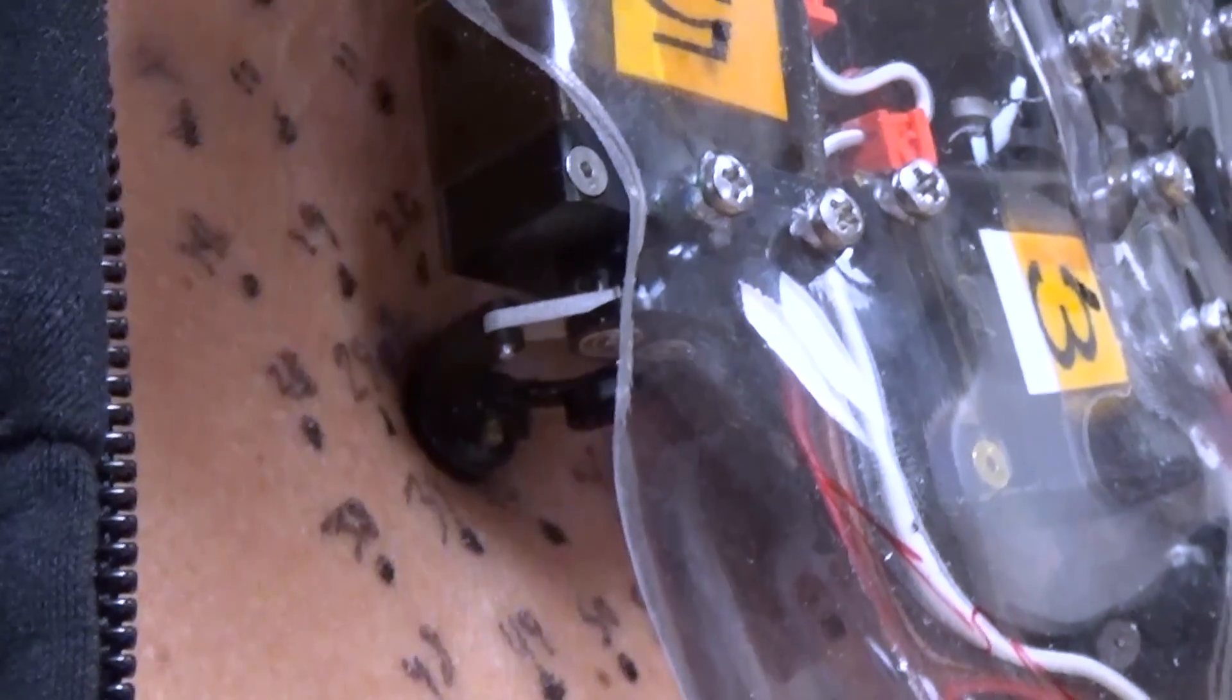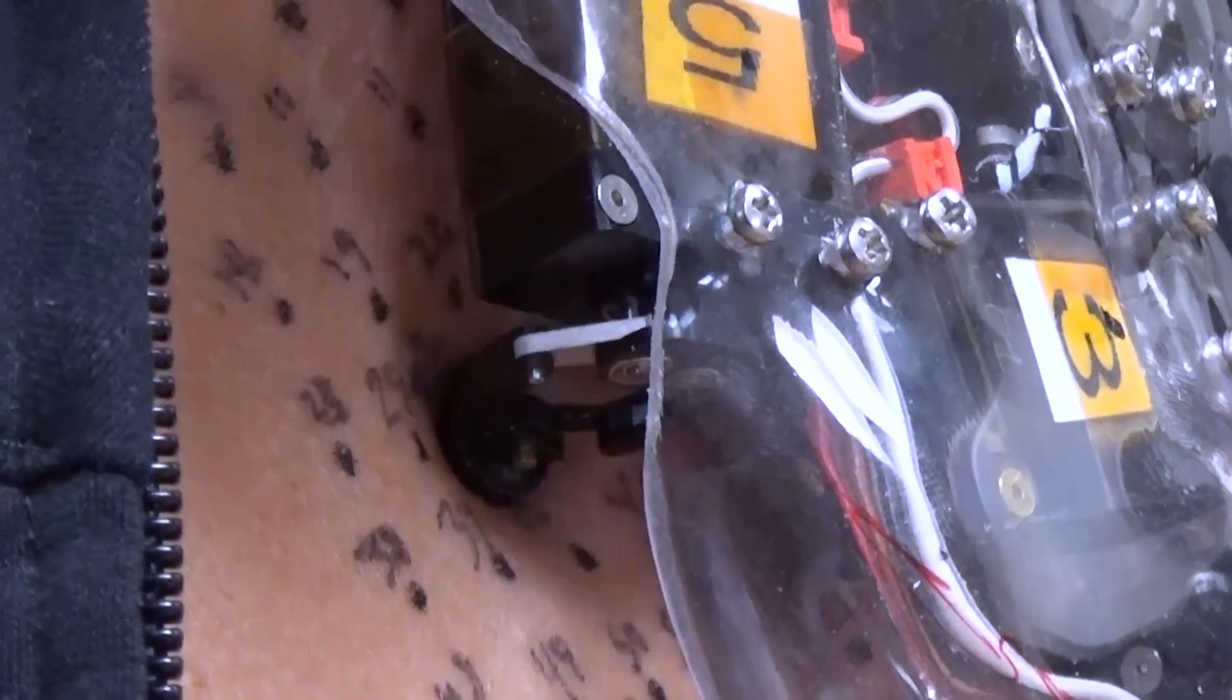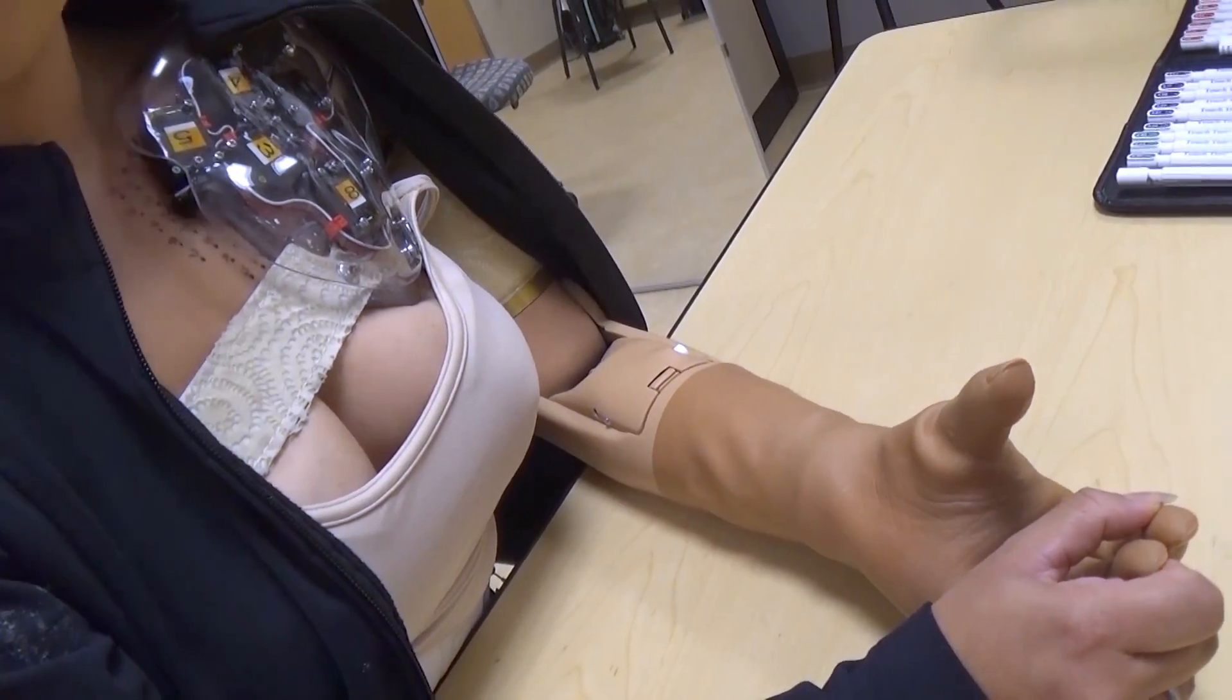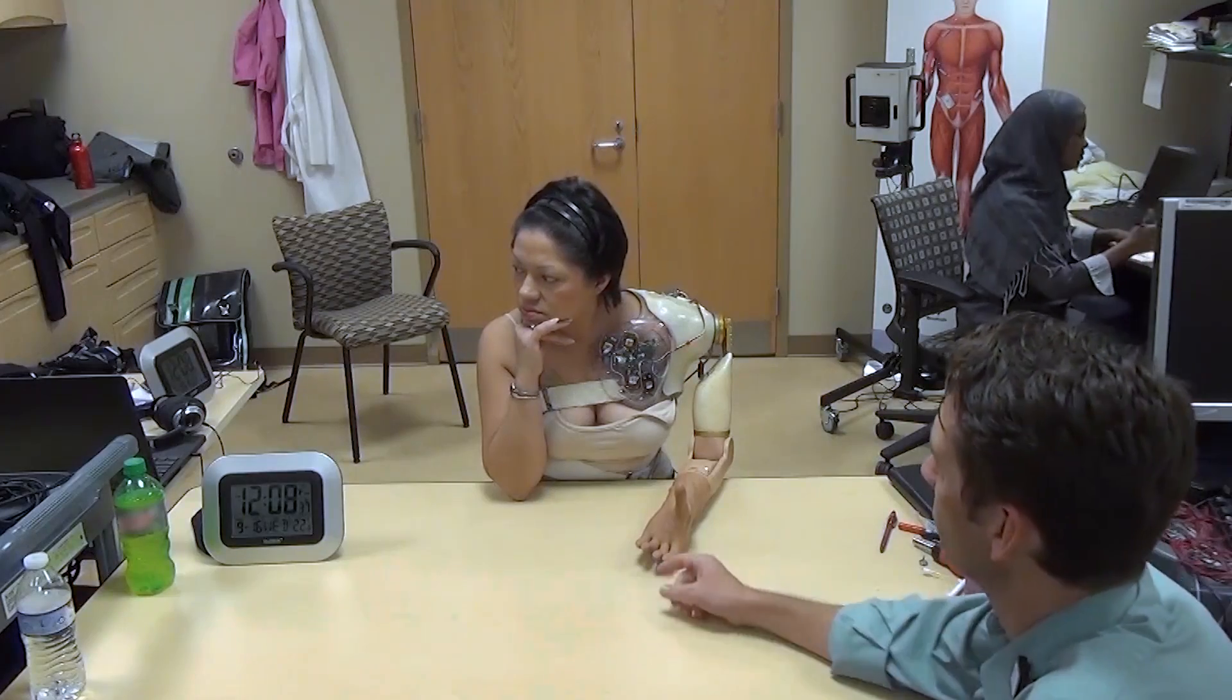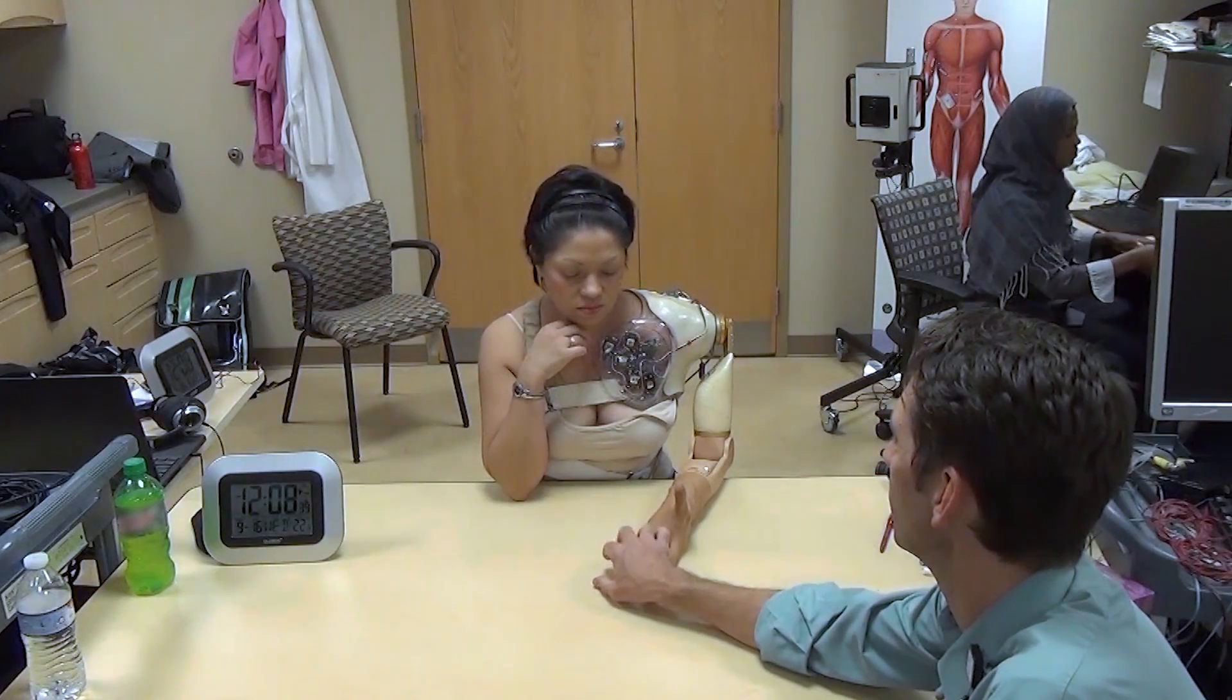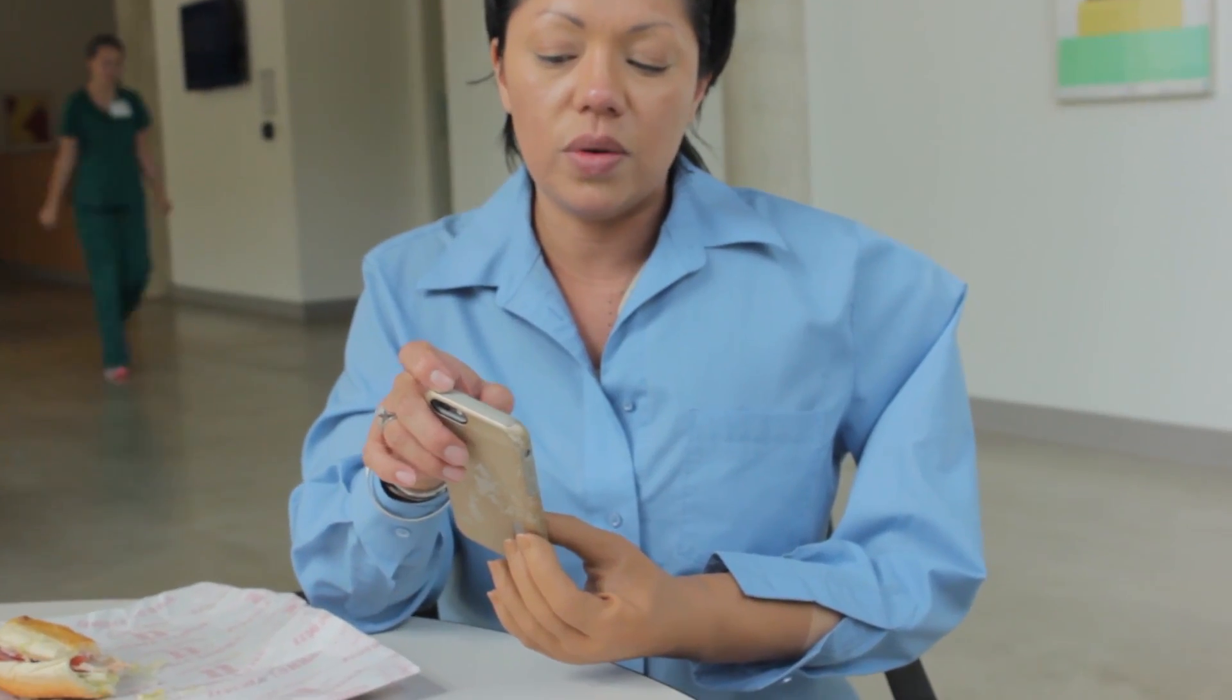Her robotic limb is bi-directionally integrated with her. She thinks about moving her hand and it moves. She feels each of the fingers and palm of her prosthesis as though they are her missing fingers and palm.